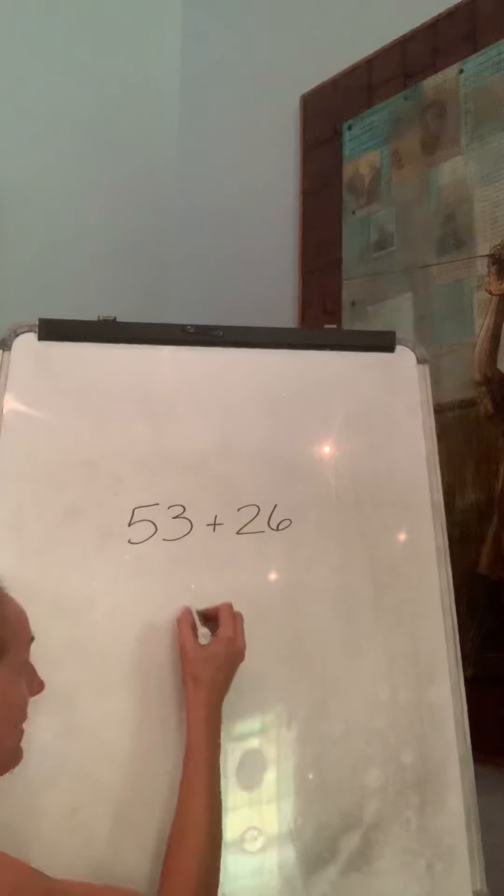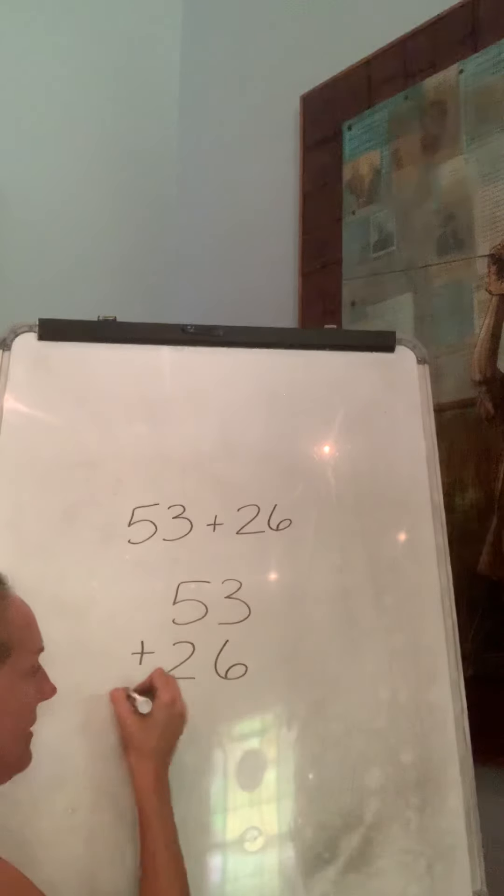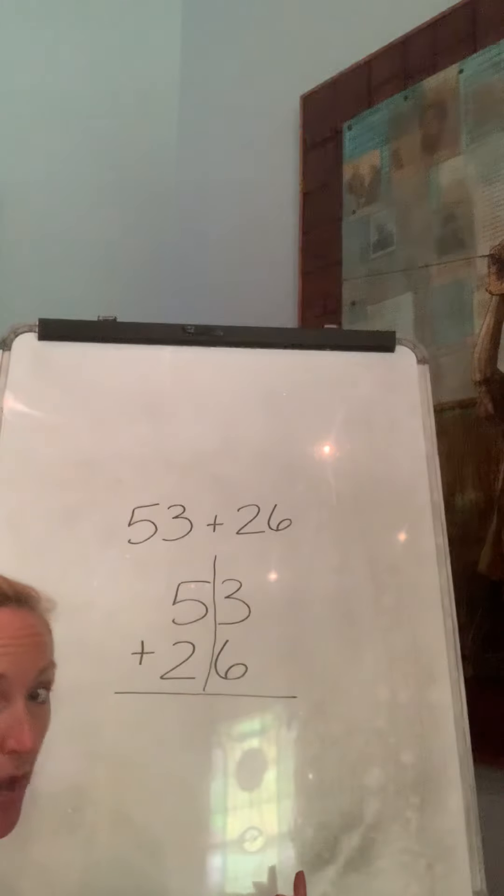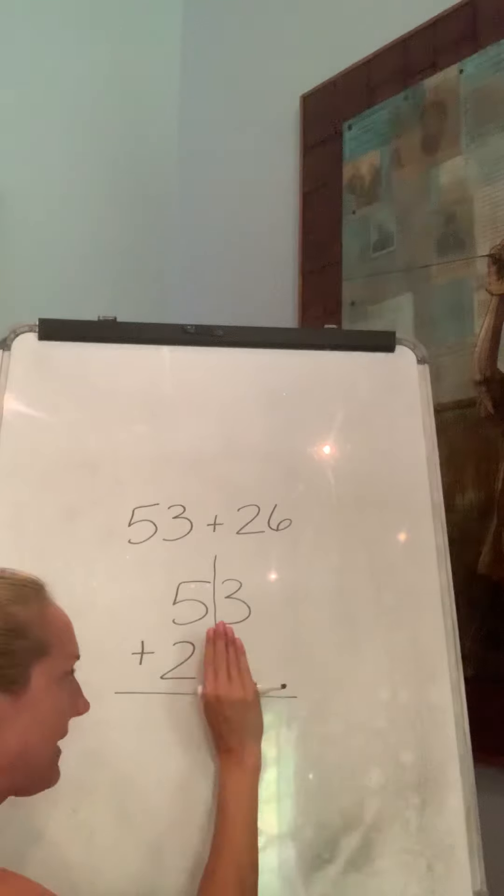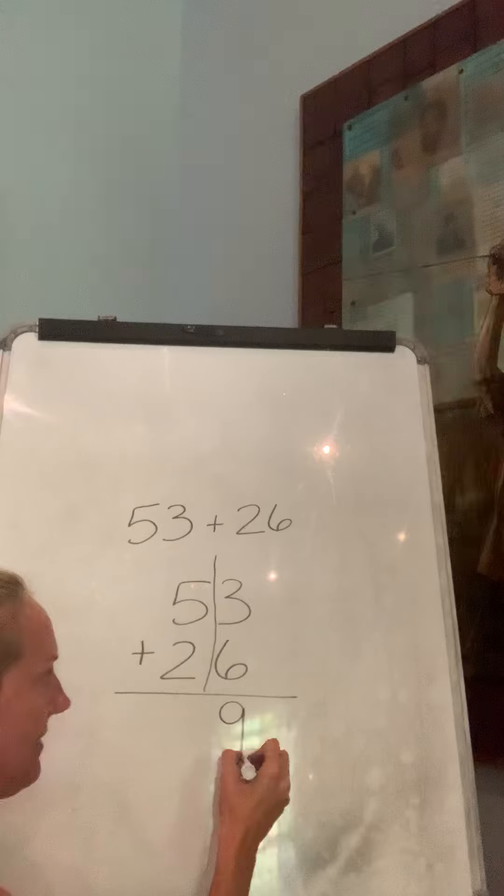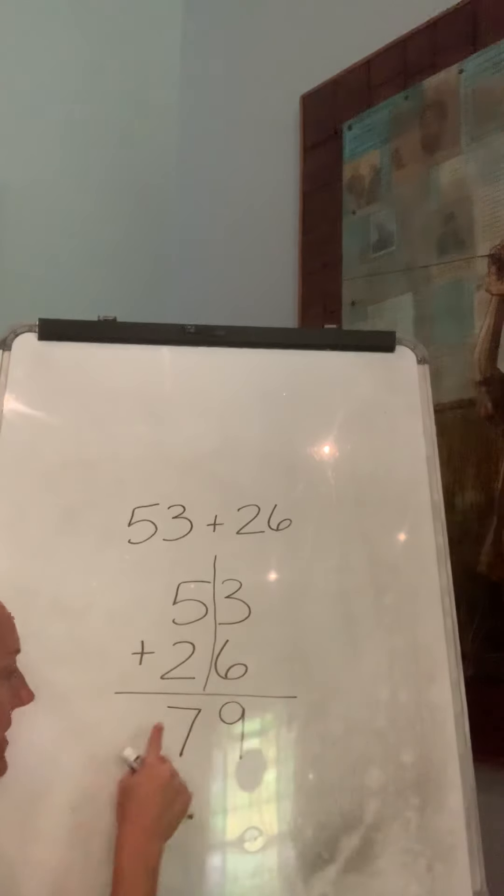Then we had some bigger numbers that we're going to have to put on top of each other. We have 53 plus 26. Well, I'm going to put them on top of each other. 53 plus 26. And I noticed Tyson and Aiden were doing this to keep it separate. Great job. We always start with the ones. 6 plus 3, well say 6, and add 3 more. 7, 8, 9. 5 plus 2, say 5, and add 2 more. 6, 7. 79.